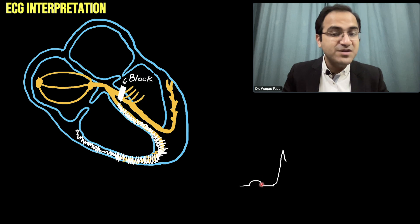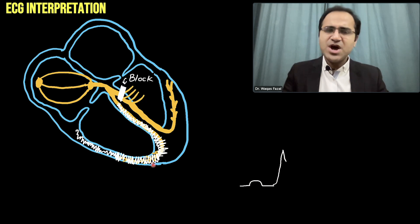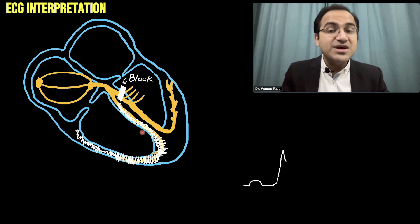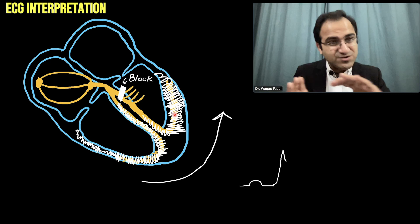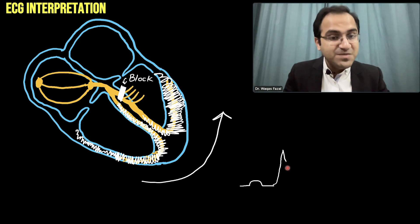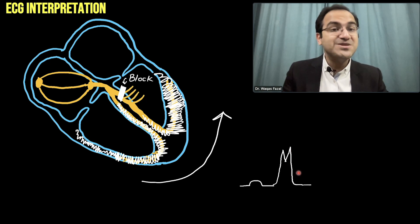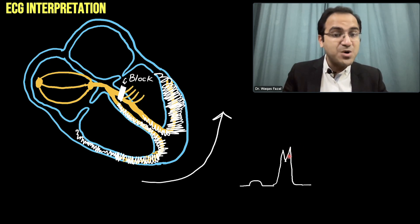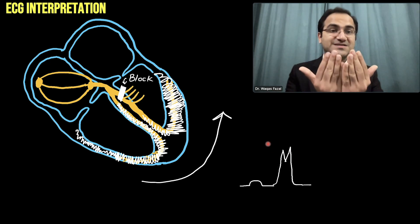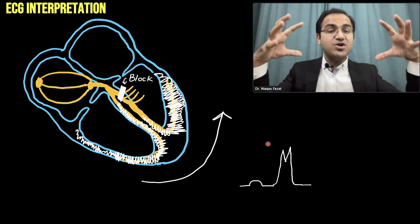On ECG, you will see a P wave due to contraction of the atria, and after that, due to depolarization of the right ventricle, there will be a QRS complex. After some time, the right ventricle sends electrical signals slowly to the left side, and the left side also gets depolarized — but it is a slow process. So after some time there will be another QRS complex due to depolarization of the left ventricle. This is called an M wave, which is a combination of two QRS complexes because the ventricles are not contracting in synchrony.